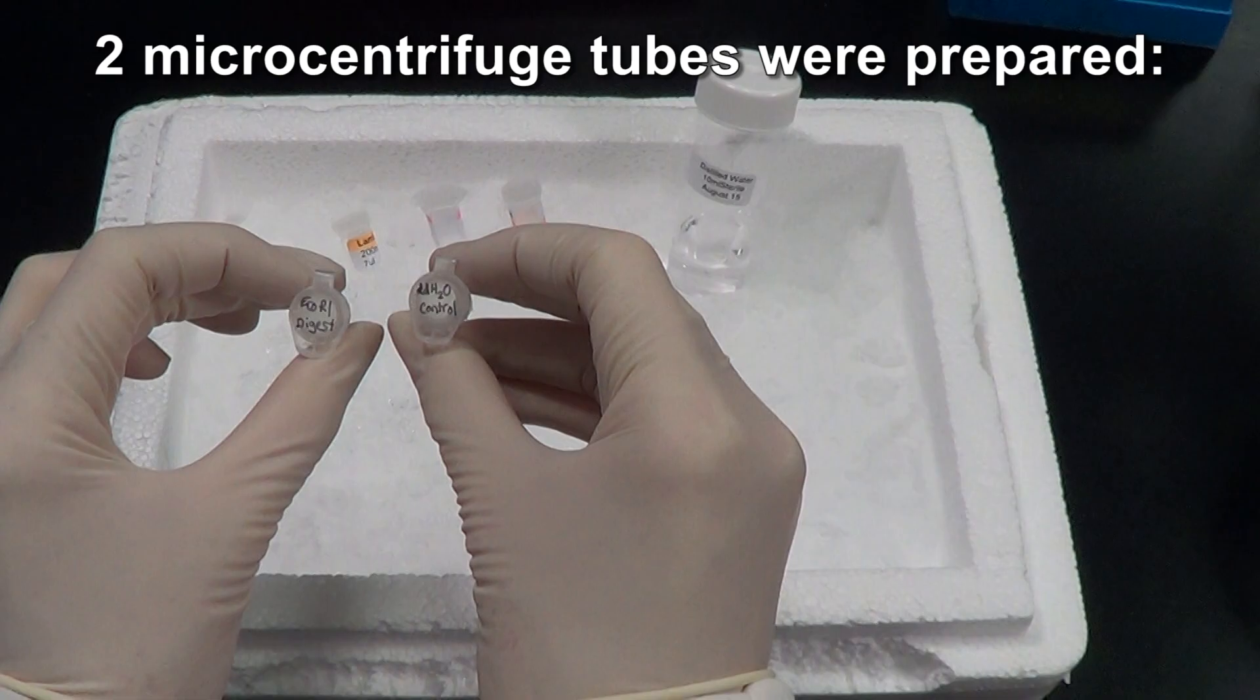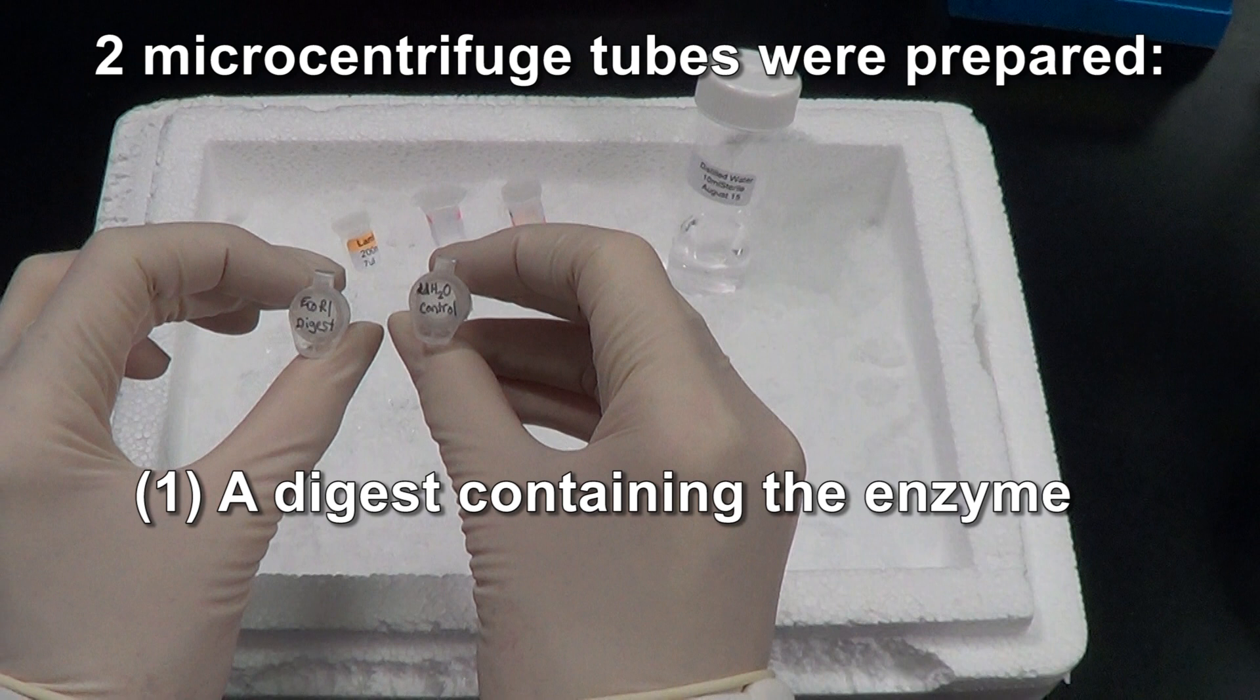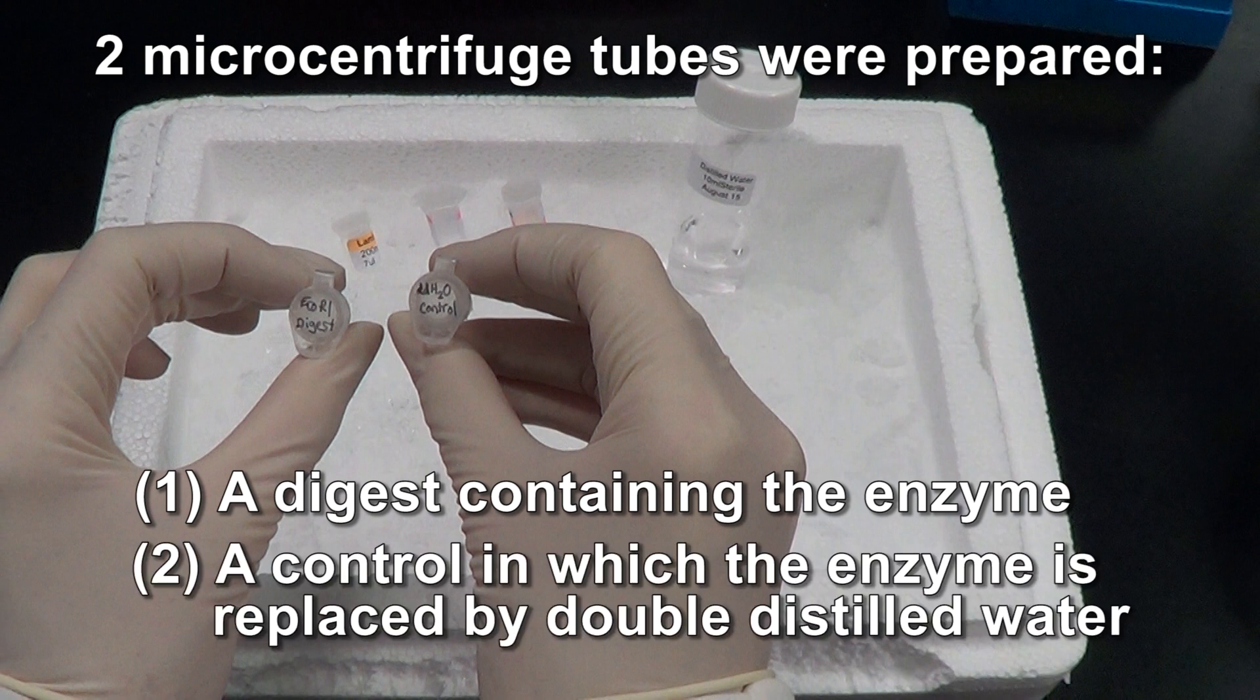In this demonstration two tubes were prepared: a digest containing the enzyme and a control in which the enzyme is replaced by double distilled water. Calculate the volumes required for each reagent before starting.